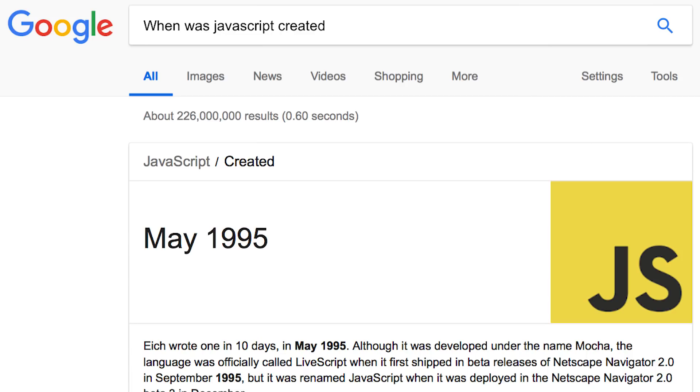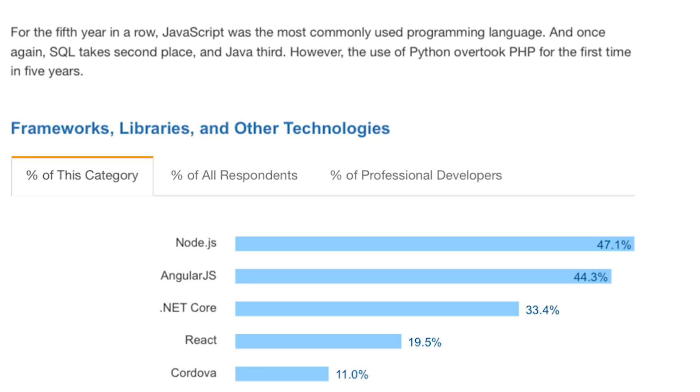If you guys didn't know this, JavaScript has actually been around for more than 20 years — that's a long time. I'm 30, so just thinking about all the changes that happened in my life since becoming a programmer is insane. JavaScript is also actually one of the most popular languages on the internet today, everyone uses it.